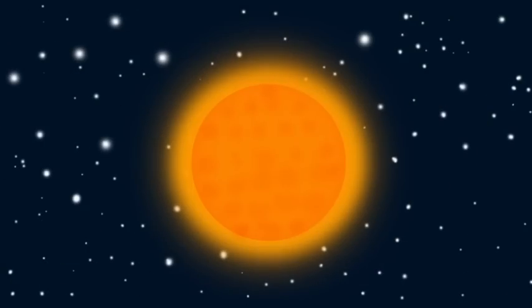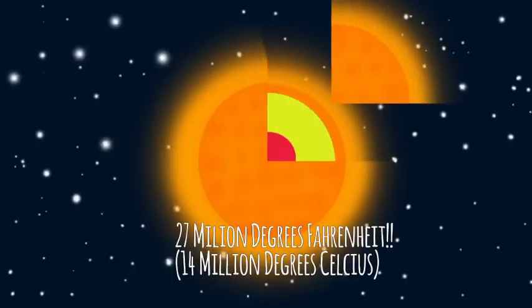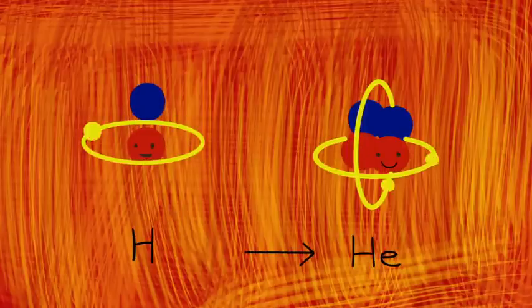The Sun releases energy deep inside its core, where it's over 27 million degrees Fahrenheit. The pressure there is so high that hydrogen atoms are squeezed together and create helium.